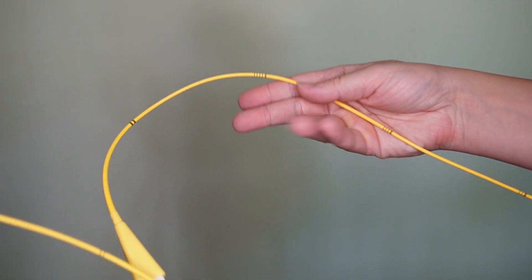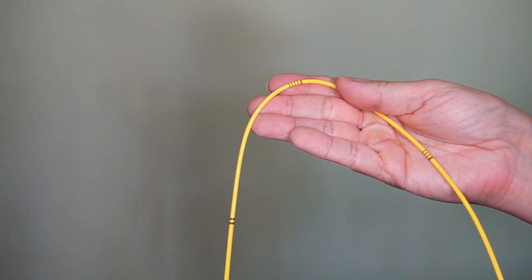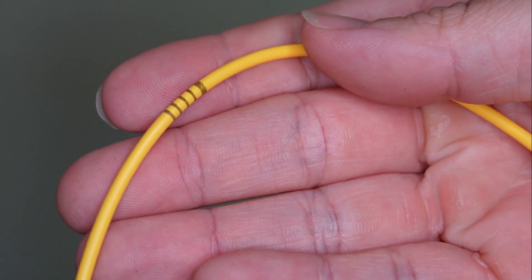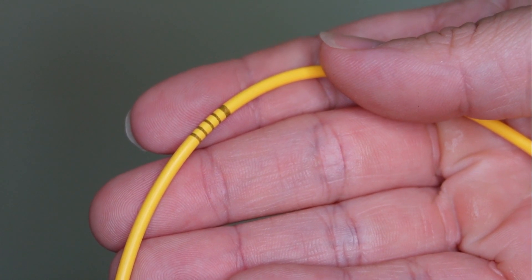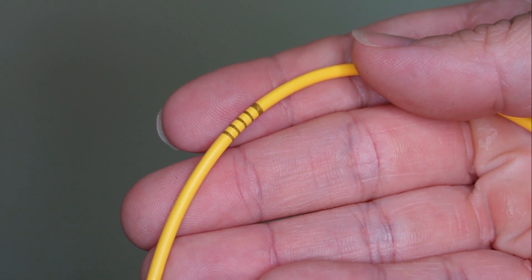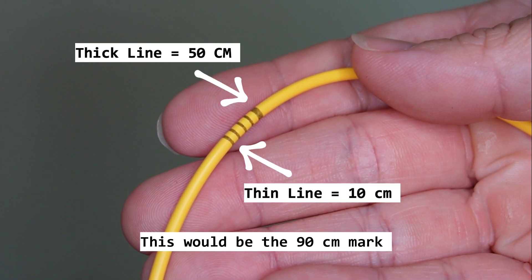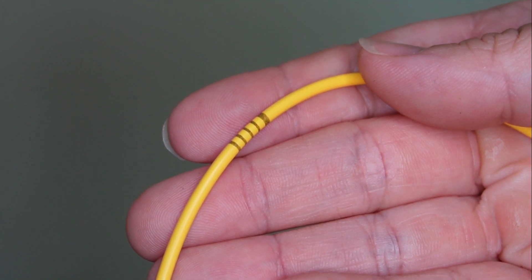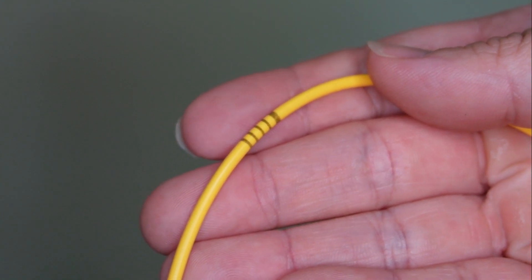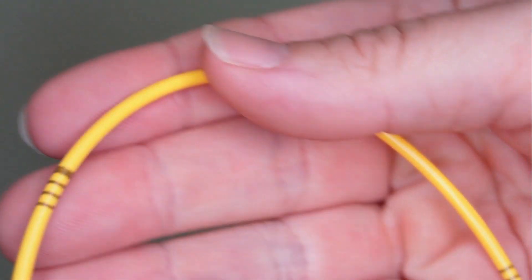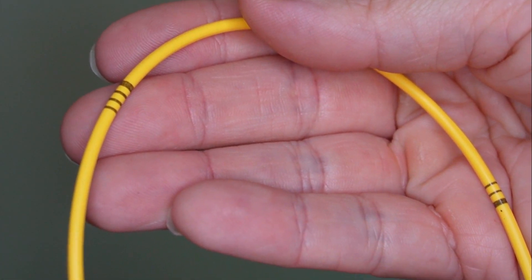Each catheter will have thick lines and thin lines. These lines represent centimeter markings and will assist with knowing where the catheter position is. A thick line represents 50 centimeters and a thin line represents 10 centimeters. You want to measure the estimated centimeter marking at the level of the cordis, introducer, or sheath. You must know the centimeter marker of the catheter because it allows you to assess if the catheter has moved or is out of position.